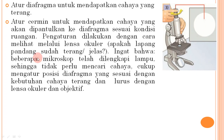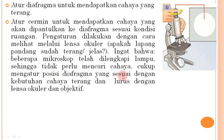Untuk memperoleh cahaya yang terang: atur diafragma dan atur cermin untuk mendapatkan cahaya yang dipantulkan ke diafragma sesuai kondisi ruangan. Pengaturan dilakukan dengan melihat melalui lensa okuler apakah lapang pandang sudah terang atau jelas. Beberapa mikroskop telah dilengkapi lampu sehingga cukup mengatur posisi diafragma sesuai kebutuhan cahaya, lurus dengan lensa okuler dan objektif.